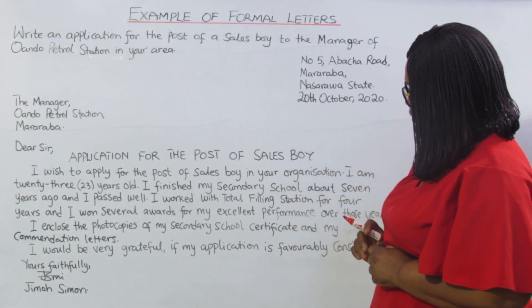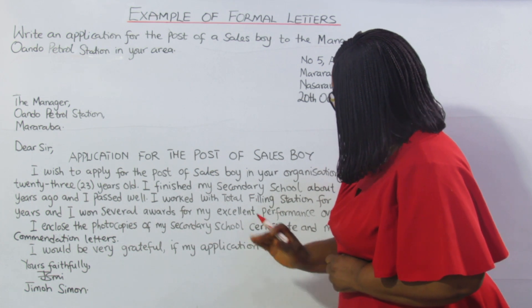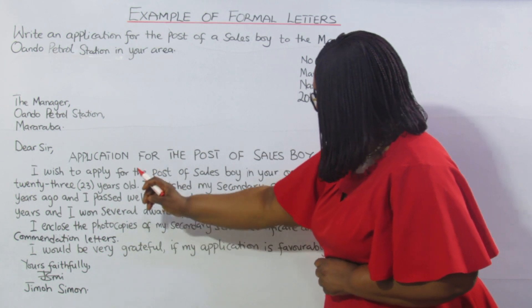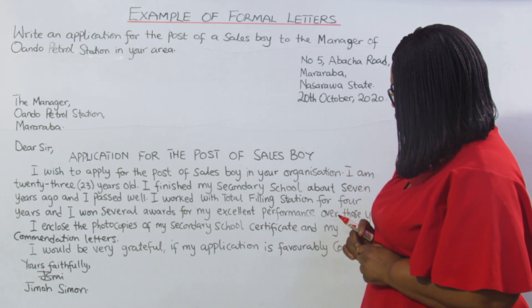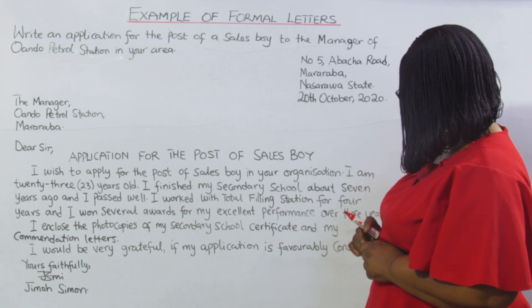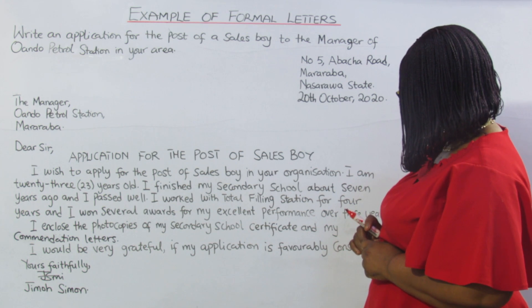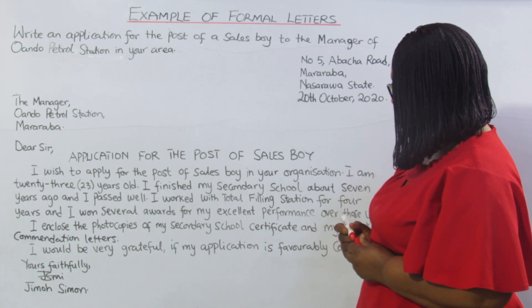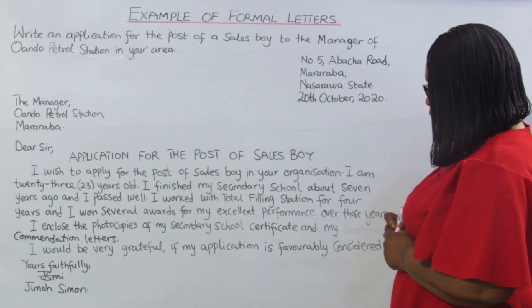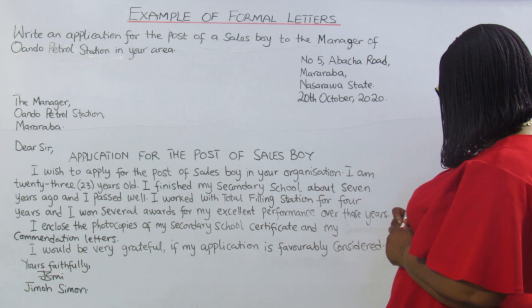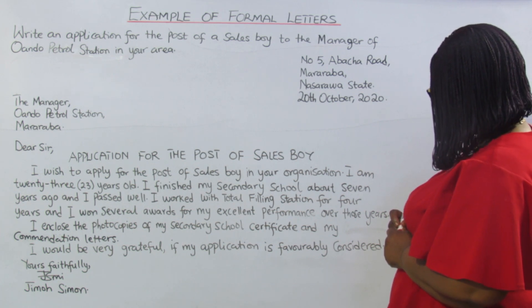Now let's look at the body of the writing. Remember, you are asked to go straight to the point — no unnecessary familiarization. The content of this application reads: I wish to apply for the post of sales boy in your organization. I am 23 years old. I finished my secondary school about 7 years ago and I passed well. I worked with Total Filling Station for 4 years and I won several awards for my excellent performance over those years. I enclosed the photocopies of my secondary school certificate and my commendation letters. I would be very grateful if my application is favourably considered.